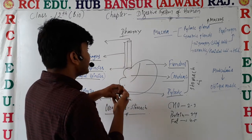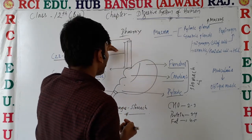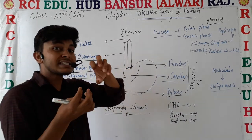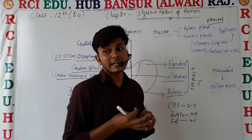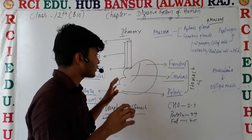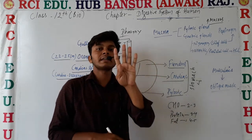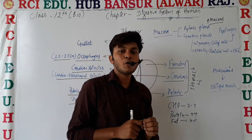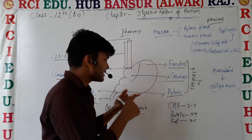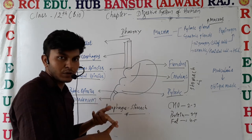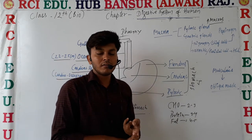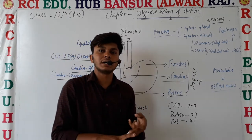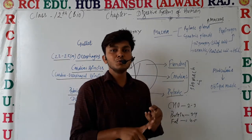We can see that the esophagus, stomach, small intestine, and large intestine are all parts of the alimentary canal. The alimentary canal consists of 4 layers: the outermost is serosa, second is muscularis, third is submucosa, and fourth is mucosa.